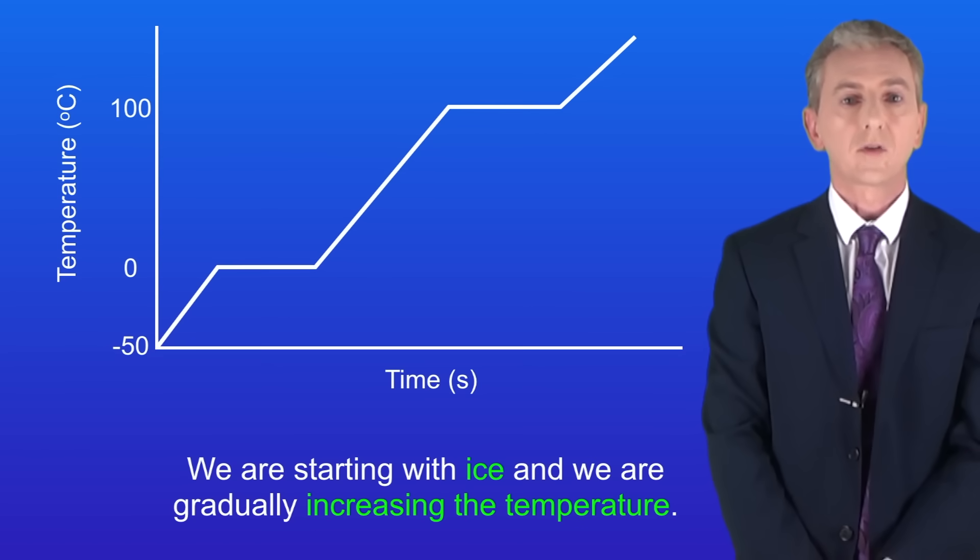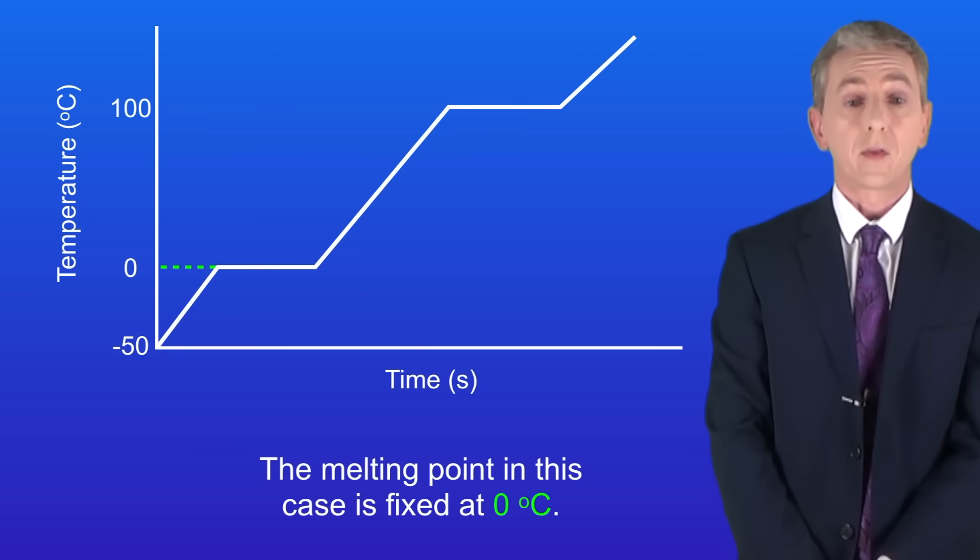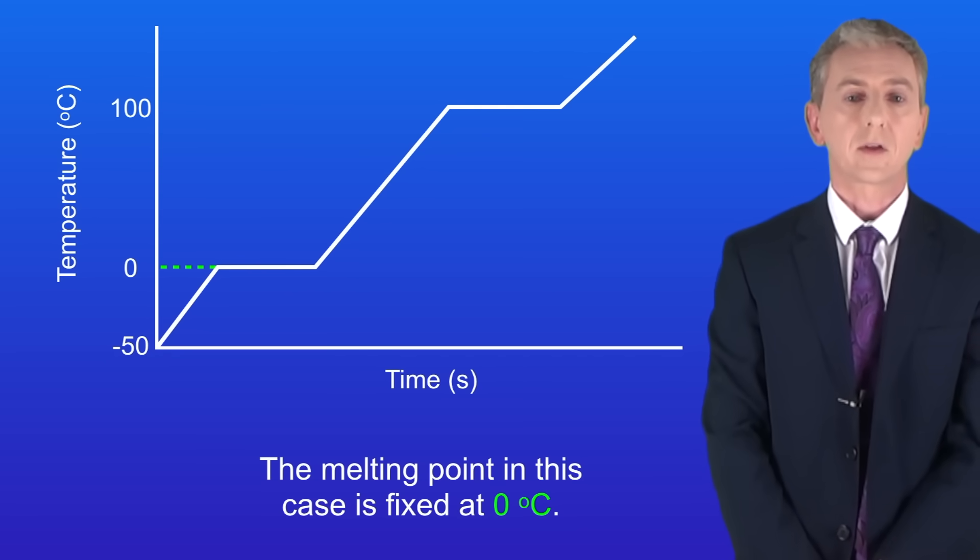I'm showing you here the results of that experiment using pure water. So we're starting with ice and we're gradually increasing the temperature. At a certain point the temperature stops rising. This is the melting point and we can see that here. As you can see the melting point in this case is fixed at zero degrees celsius.